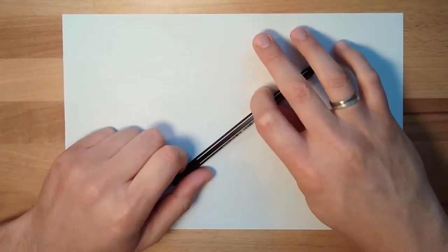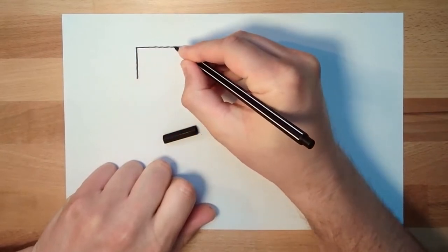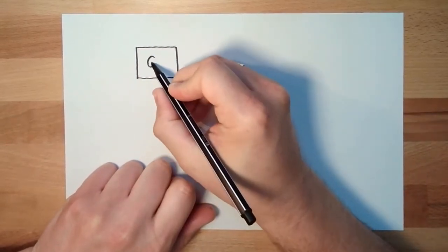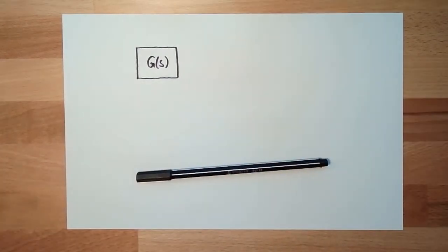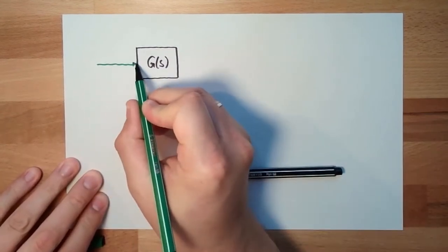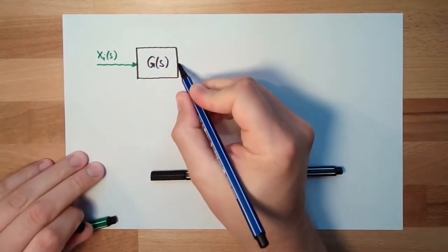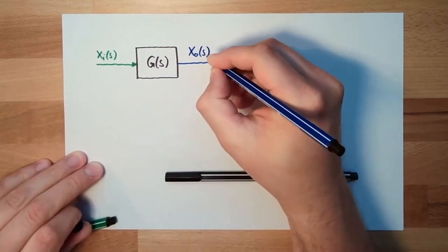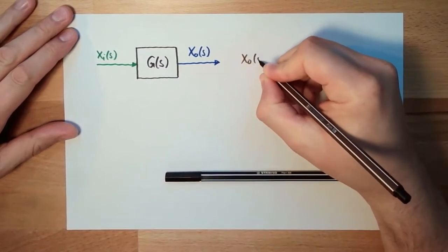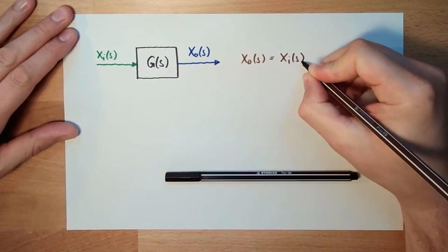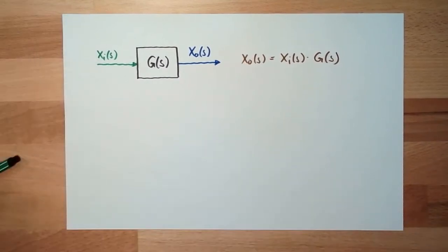Hello and welcome back to Control Engineering. Remember last time we talked about the transfer function. We said there is one block, one system, it has a certain transfer function usually denoted by a capital letter. There is some input and there is some output. The output is the input multiplied by this transfer function. This is all in the s-domain, and s is a complex variable.